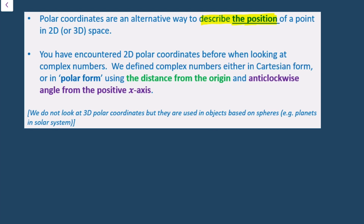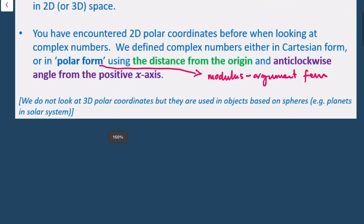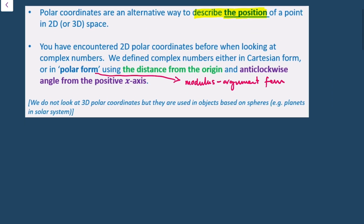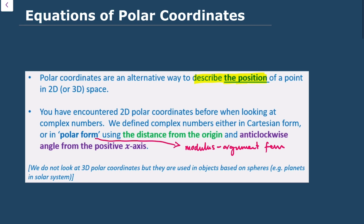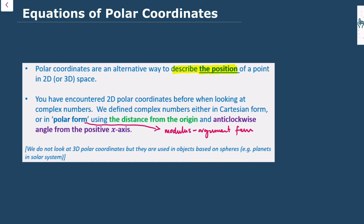We've encountered this before when we looked at complex numbers, defined either in Cartesian form or in polar form — the modulus argument form — where we used the distance from the origin and measured the argument as the anticlockwise angle from the positive x-axis. We don't look at 3D polar coordinates in this chapter, though they are used for objects based on spheres, such as planets in the solar system.